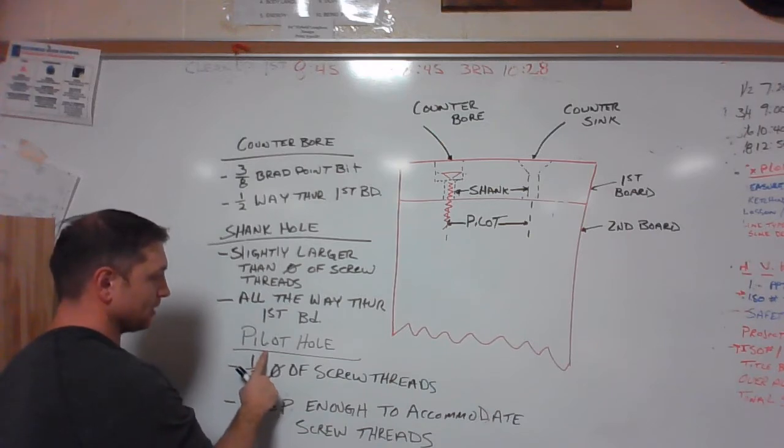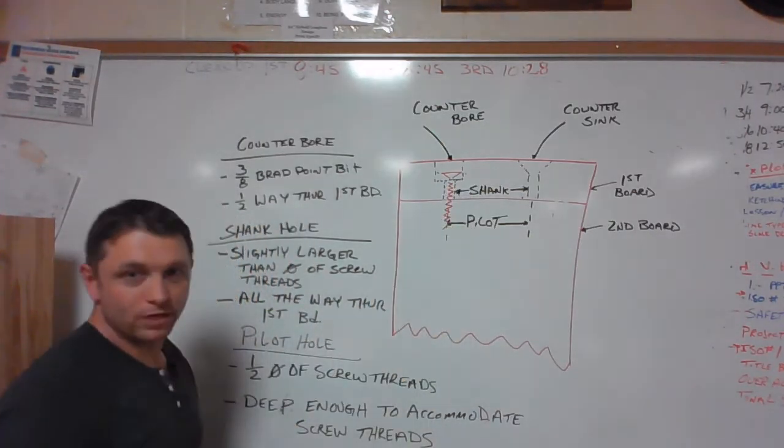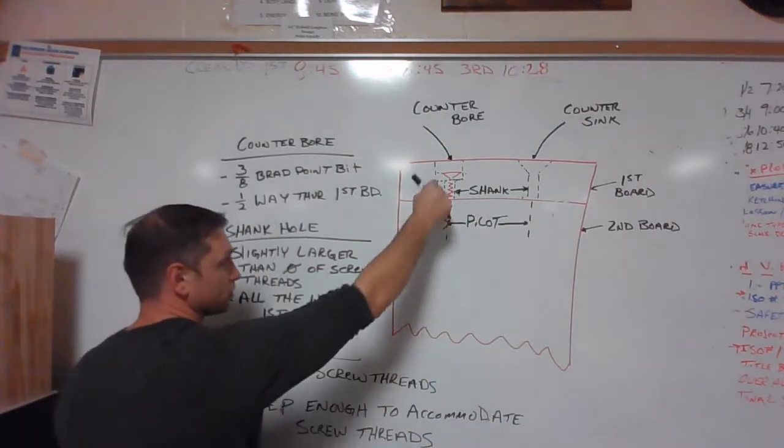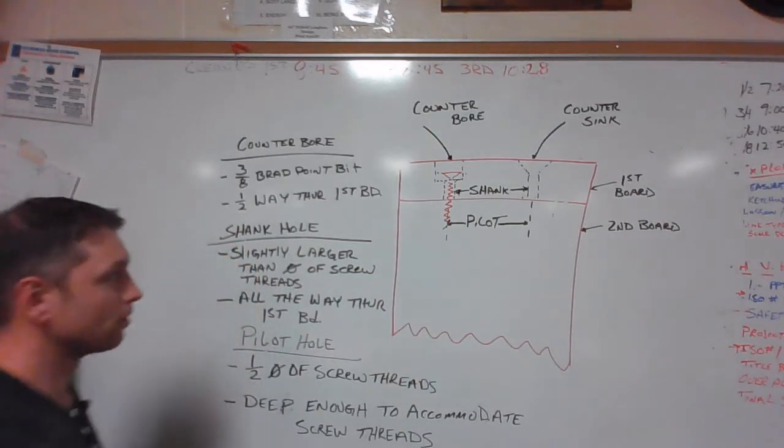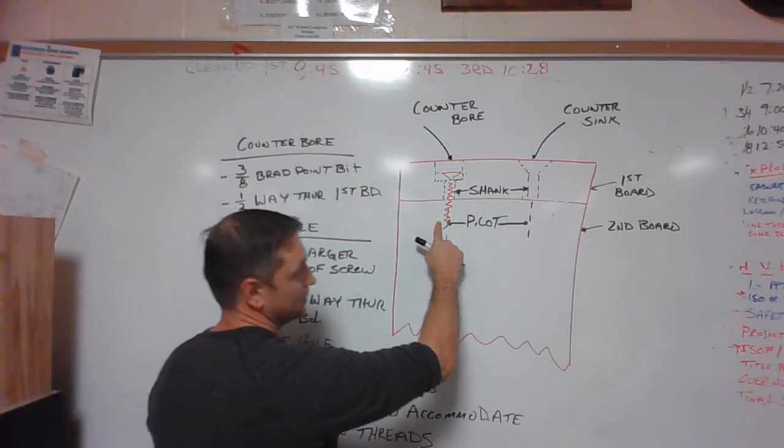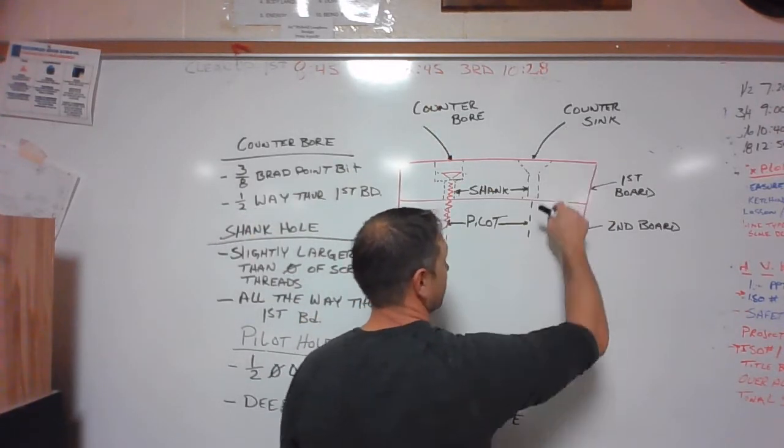Lastly we're drilling the pilot hole, half the diameter of the screw thread, so the screw can actually screw into the material. At that point it's screwing into the material and it's also guiding the screw into the proper location. Again, pilot hole is preventing the material from splitting first board, second board.